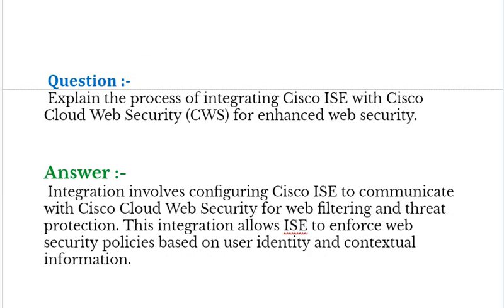Interview question: Explain the process of integrating Cisco ISE with Cisco Cloud Web Security (CWS) for enhanced web security. Answer: Integration involves configuring Cisco ISE to communicate with Cisco Cloud Web Security for web filtering and threat protection. This integration allows ISE to enforce web security policies based on user identity and contextual information.